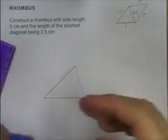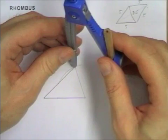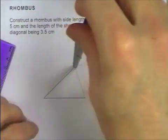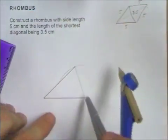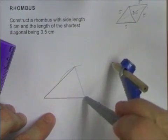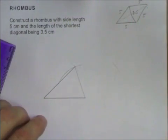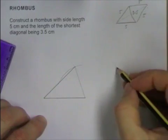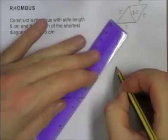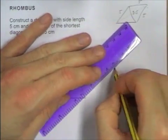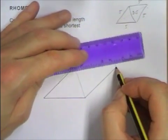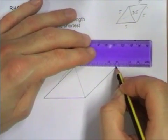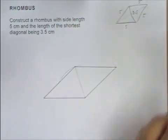My compasses are still set at 5. So, I can say, well, I want something 5 away from here. That's that. And I want something 5 away from here. So, that's that. There's my crossing point. This must be the fourth point of my rhombus. And there you go.